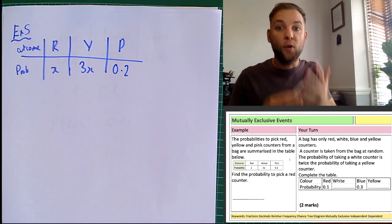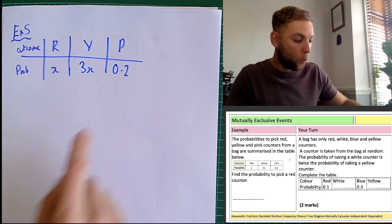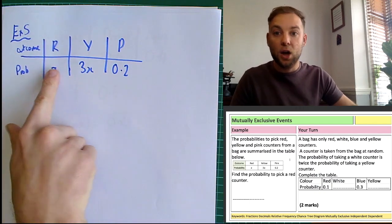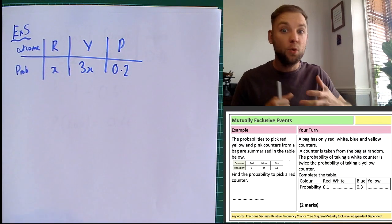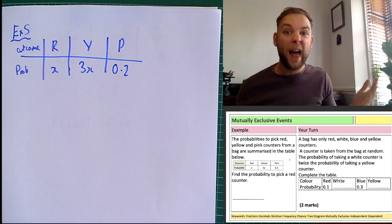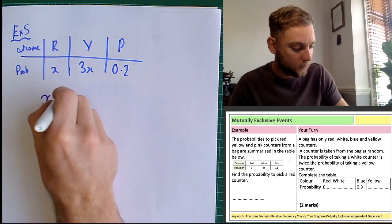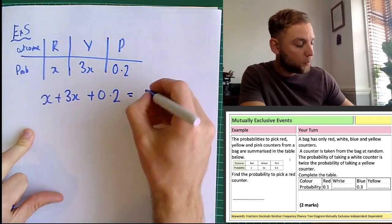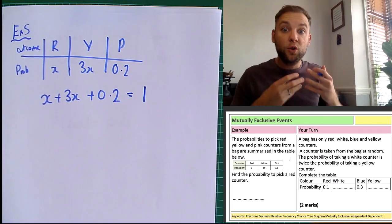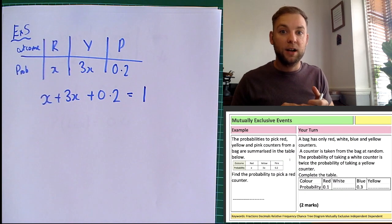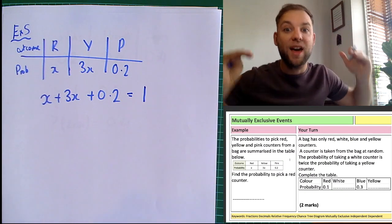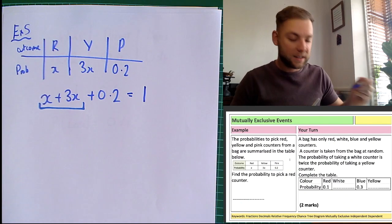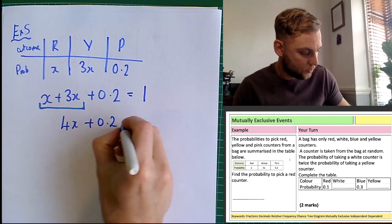What we're doing here is forming an equation and solving it. We know the probability of all these things happening sums to 1, so the probability of each added together equals 1. It's about forming that equation and then solving it. So it's x plus 3x plus 0.2 equals 1. Simplifying by bringing the x's together: x plus 3x is 4x, so we get 4x plus 0.2 equals 1.